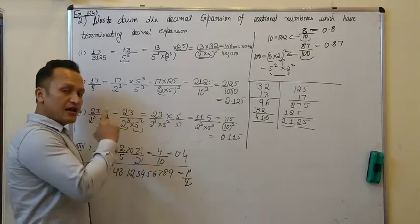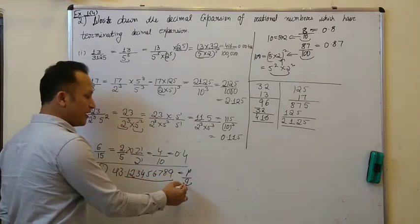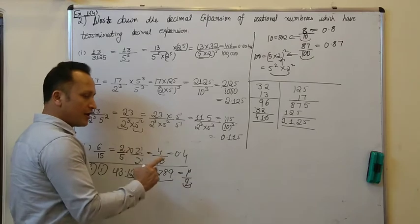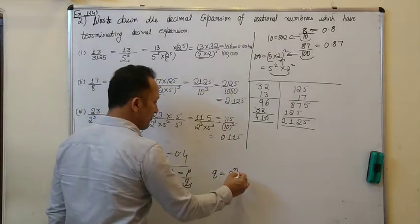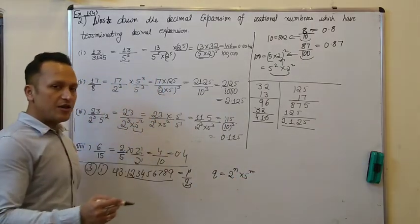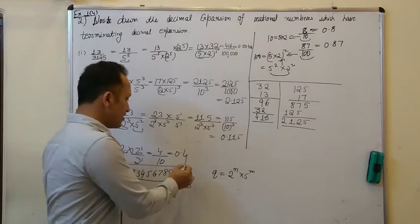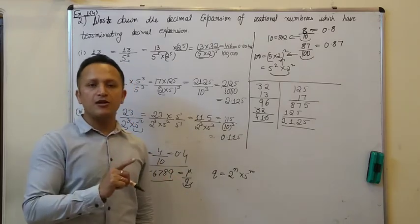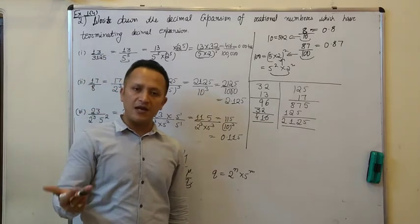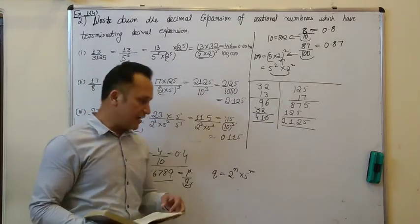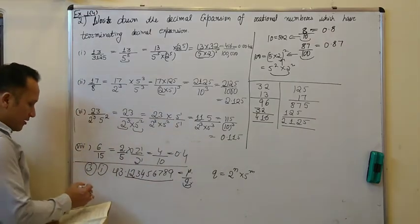As discussed in the last video, if a number is terminating and written in p/q format where p and q are co-prime numbers, then the denominator is expressed in the form of 2 power n into 5 power m. That was about such type of numbers.